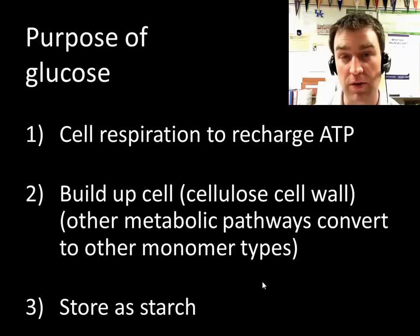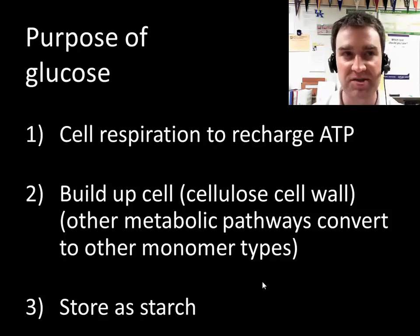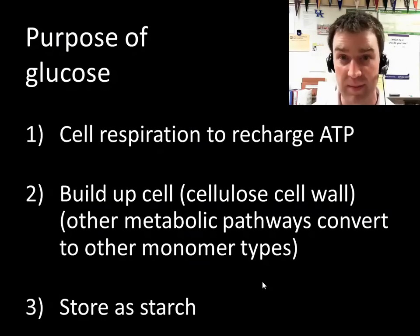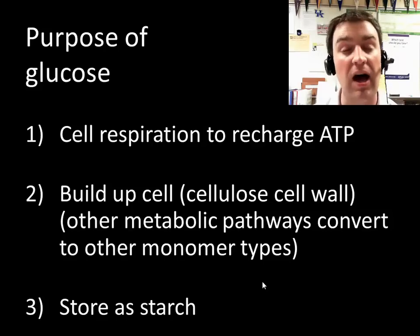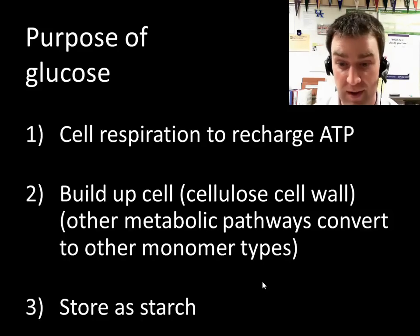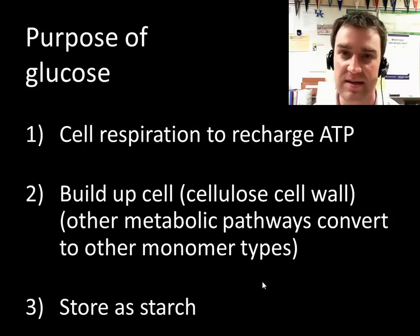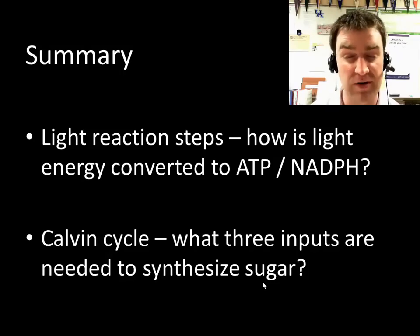But don't forget that sugar has many purposes within an autotroph. Autotrophs don't eat, so they have to build all the macromolecules that make up their cells. Sugar isn't just used to make other carbohydrates — glucose made in photosynthesis can be sent to other metabolic pathways. With nitrogen and sulfur from the soil, we could make amino acid monomers. With nitrogen and phosphorus, we could make nucleotide monomers. There are lots of different purposes for glucose, not just to burn it again to make ATP. That's a broad summary of the Calvin cycle and the light reactions.